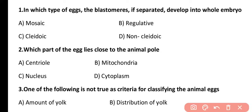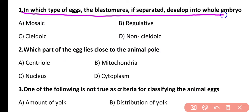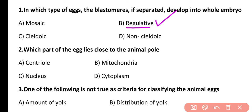Question 1. In which type of eggs, if blastomeres are separated, do they develop into a whole embryo? Mosaic egg, regulative egg, cliodic egg, or non-cliodic egg? The correct answer is option B. In regulative egg types, also called indeterminate egg types, the fate of blastomeres is not fixed. So if blastomeres are separated, they will develop into a whole embryo.